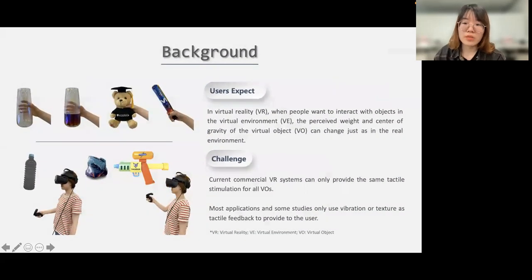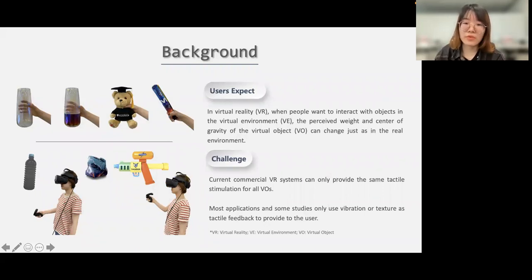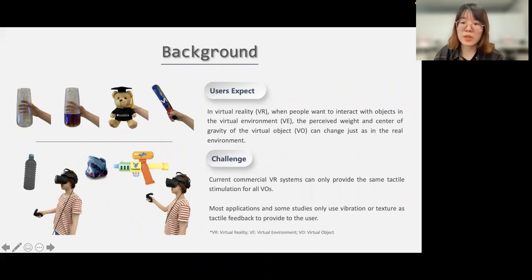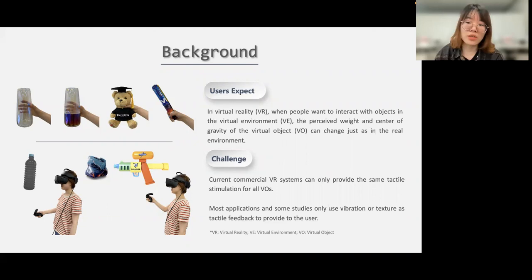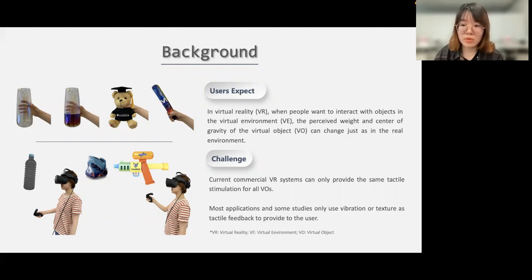Sensing an object's weight and how its weight is distributed is one of the main ways people understand objects in real life. In virtual reality, when people want to interact with objects in the virtual environment, they expect that the perceived weight and center of gravity of virtual objects can change just as in a real environment. However, this remains a significant challenge for immersive virtual reality, and if an application is to allow a further immersive experience, this aspect could be important.